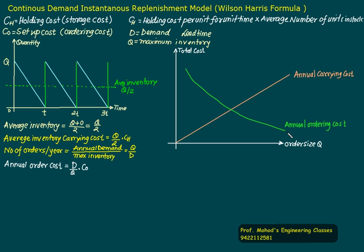the order size increases. The sum of this annual ordering cost plus carrying cost is called total cost. The total cost...